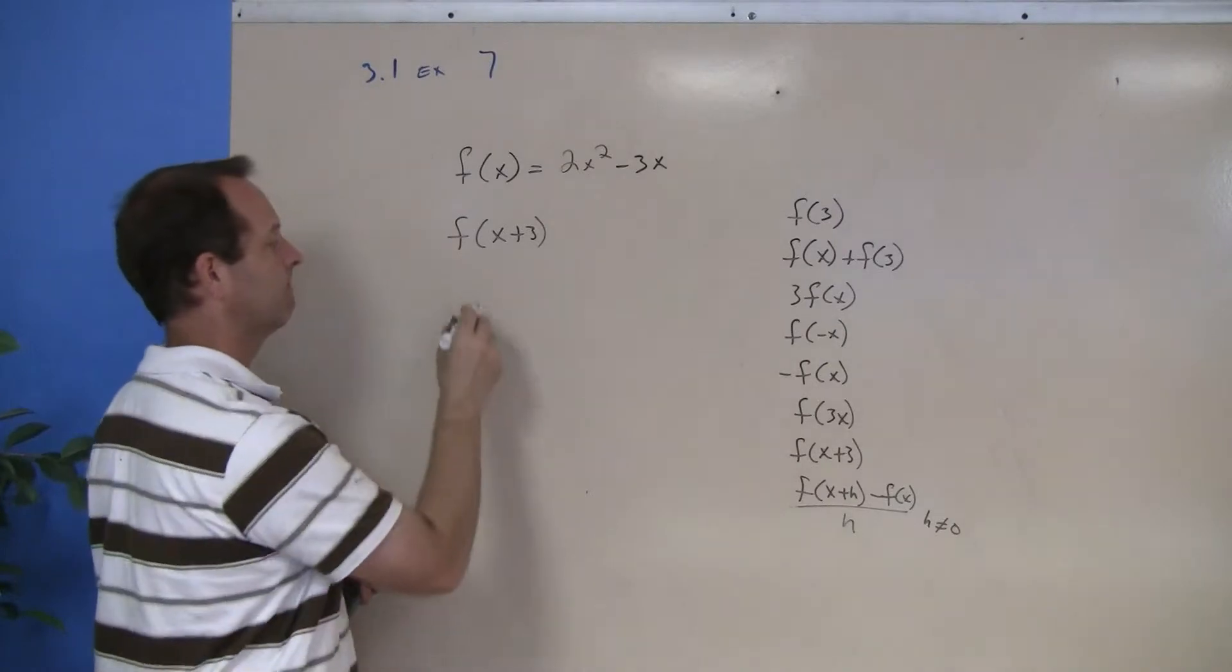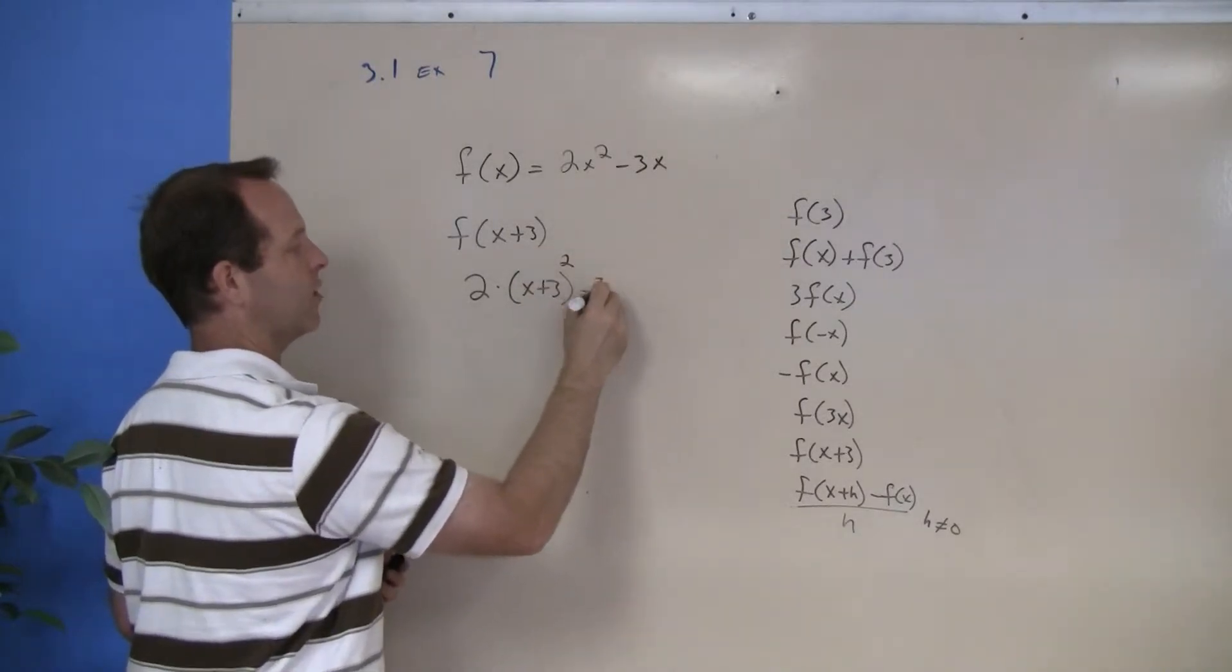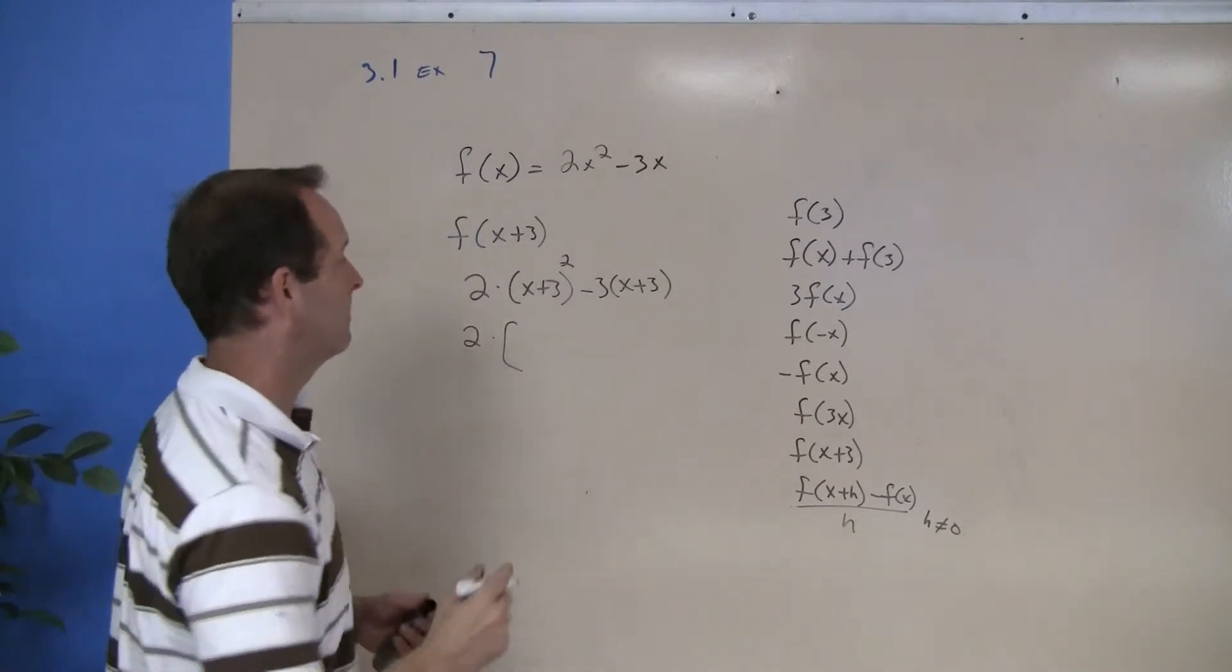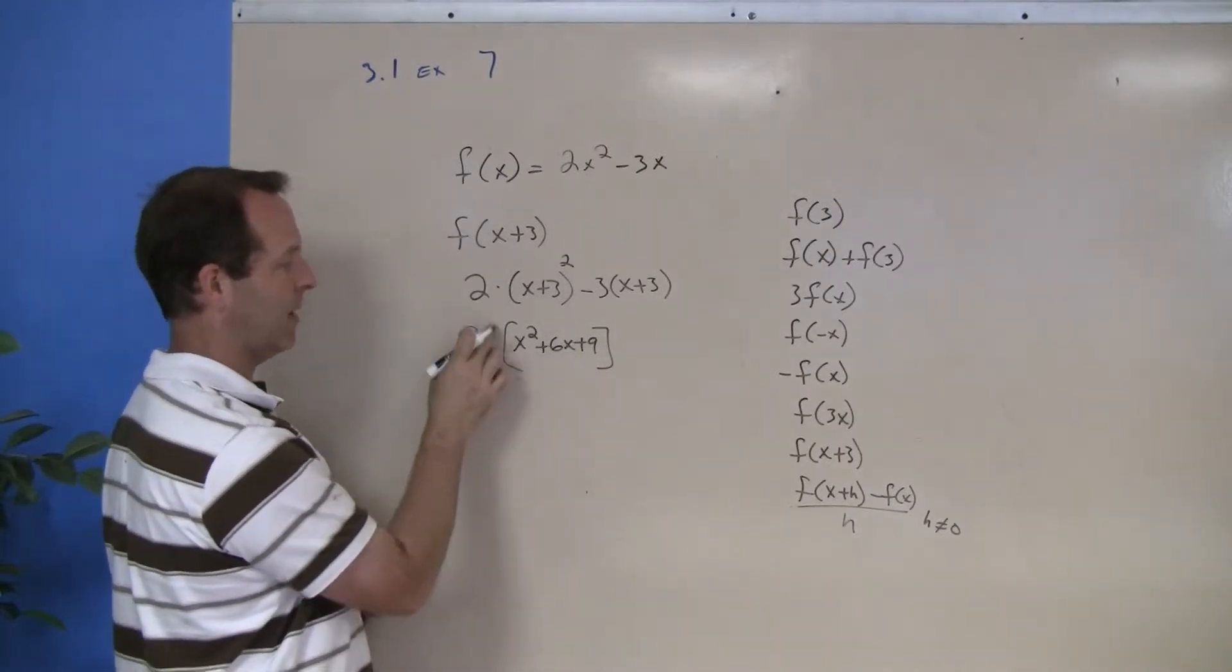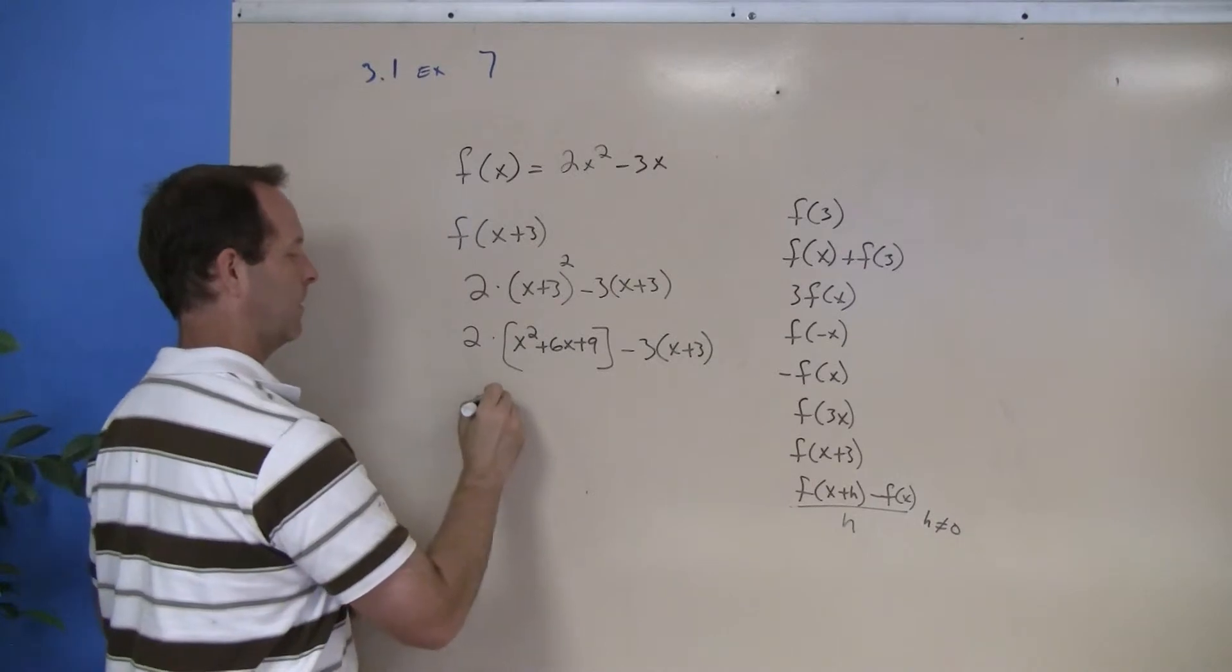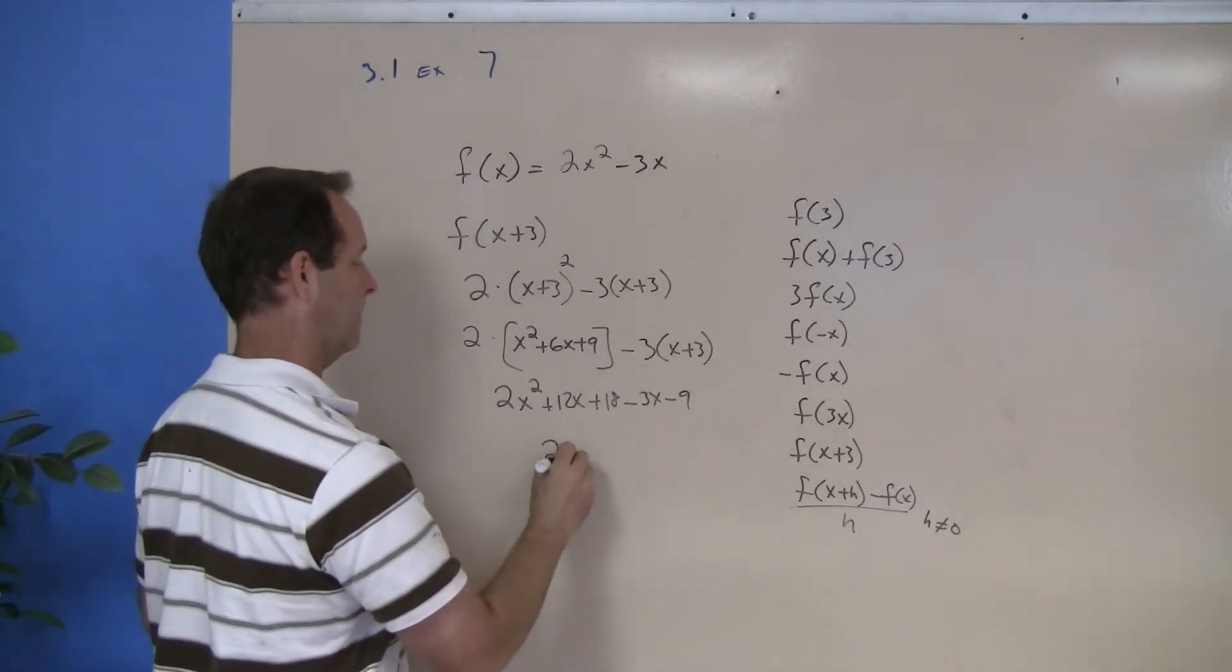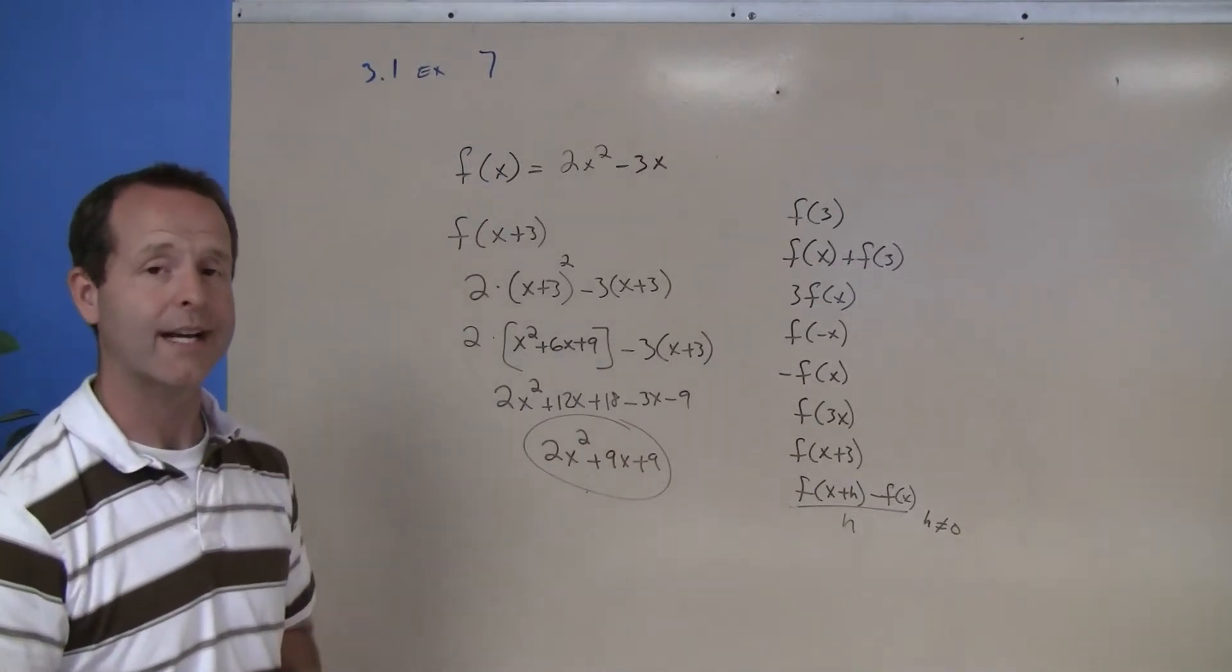2 times (x plus 3), which is my x value, squared. 2 times (x plus 3) times (x plus 3): x squared plus 6x plus 9, and see how I have it all in brackets because this 2 is being multiplied to this entire term, then minus 3 times (x plus 3). 2x squared plus 12x plus 18 minus 3x minus 9. Combine some like terms, my result is 2x squared plus 9x plus 9.